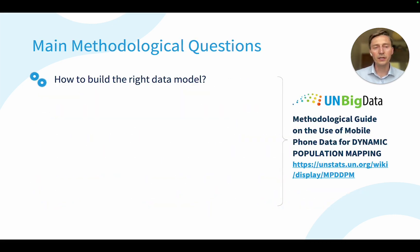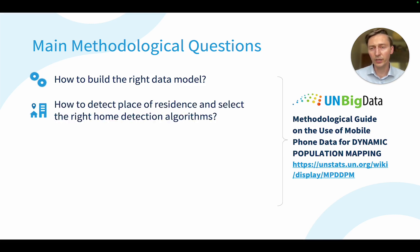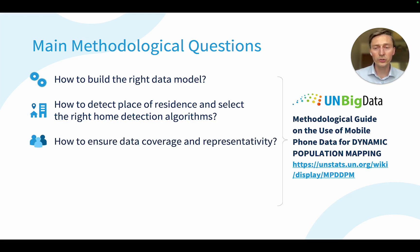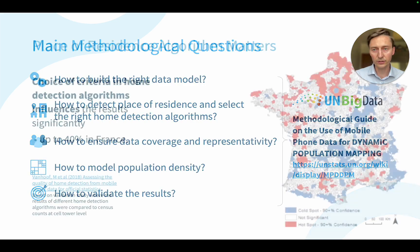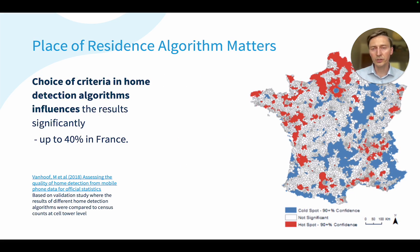There are methodological questions, and our methodological guide on the use of mobile phone data for dynamic population mapping should help you get started. For example: how to build the right data model, what to take into account, how to detect place of residence and which home detection algorithms to choose, how to ensure data coverage and representativity, how to model and validate the results. How you choose the criteria and detect home in your algorithms significantly influences results — a study done in France found results could differ by up to 40% on average, with even higher differences at the sub-area level.